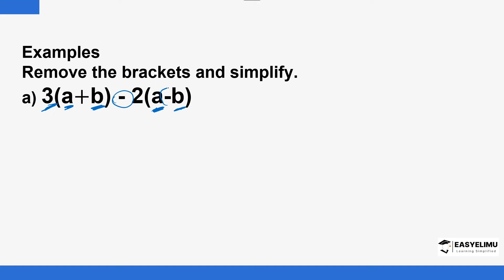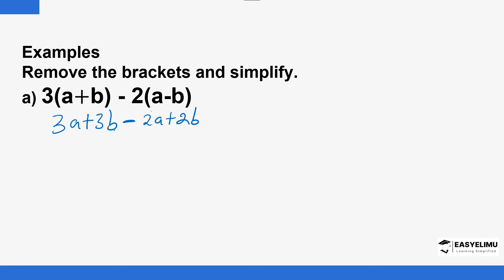When a minus sign appears before the bracket, the signs inside the bracket will have to change after you open the bracket — they change to their opposites. So here we have three multiplied by a to give us 3a, plus 3 multiplied by b to give us 3b. Then here we have minus 2 multiplied by a giving 2a, but because the minus sign is in front of the bracket the sign inside changes, so minus becomes plus and 2 times b is 2b.